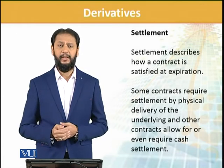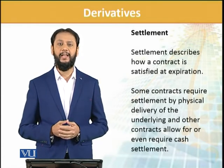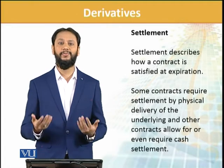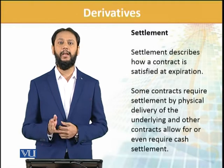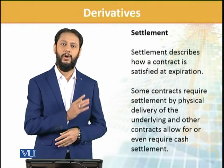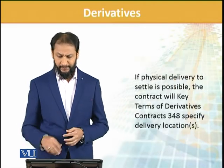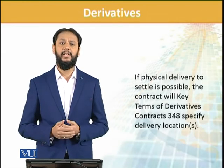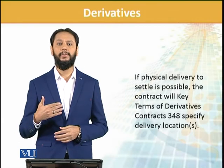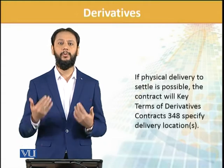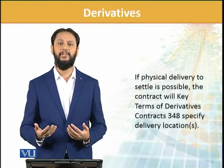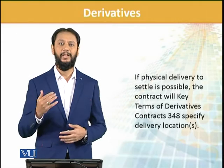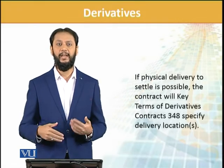Then comes settlement. Settlement describes how a contract is satisfied at expiration — when the maturity time comes and it has expired, how will the settlement happen, what exchange will take place and in what form — that is referred to as settlement. The clarity of settlement will also be established at the beginning of the contract, specifying what the settlement mechanism is. If physical delivery of the asset is possible, the contract will keep that. For example, physical delivery means: we told you that six months from now we will buy one ton of wheat from you — so physical delivery means you give us one ton of wheat after six months, and we pay you the specified amount. This is referred to as physical delivery. It is one type of settlement.